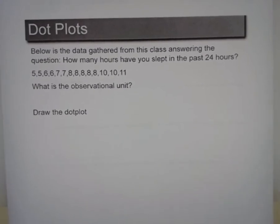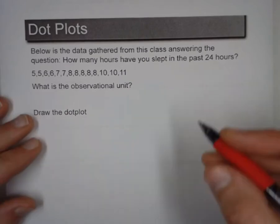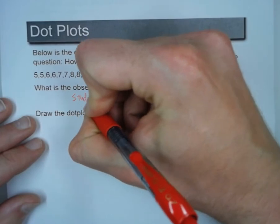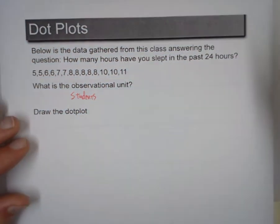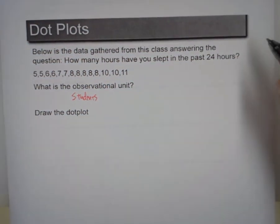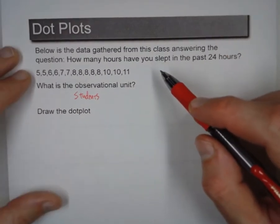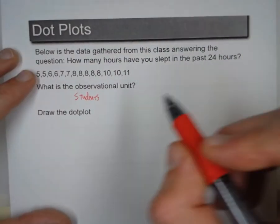Next one. Below is the data gathered from this class answering the question, how many hours have you slept in the past twenty-four hours? So since I gather this from this class, the observational unit are students. So now, to draw the dot plot. The lowest number is five. The highest number is eleven.